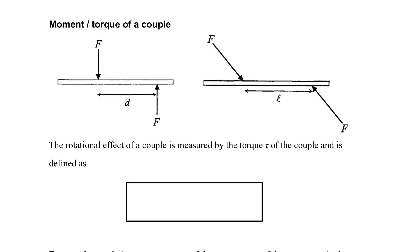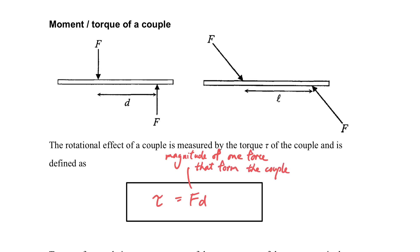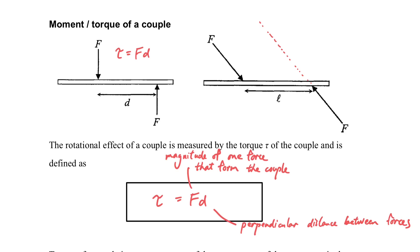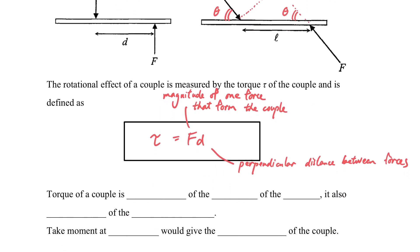How do we calculate the torque of a couple? It is simply F times d, where F is the magnitude of one of the forces forming the couple — you do not need to multiply the force twice, just consider one force. The distance d is the perpendicular distance between the two forces. If the given distance l is not the perpendicular distance, use sine and cosine to find the perpendicular distance d, then calculate the couple.